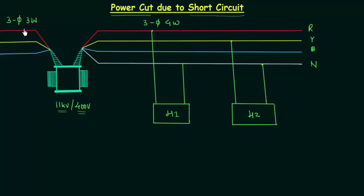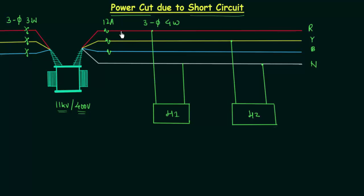On the primary side of the transformer we have an air brake switch. This air brake switch is closed under normal operations. On the secondary side we have fuses, and let's say the rating of each fuse is 12A. So whenever the current greater than 12A flows through the line the fuse will blow up. For example, if in the red line there is a current of 13A then that fuse will blow, but the fuses in yellow and blue lines will continue to work.